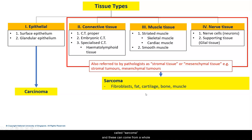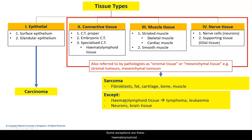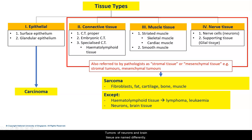Sarcomas can come from a whole range of cell types, for example fibroblasts seen in connective tissue proper, fat, cartilage, and bone, which are part of specialised connective tissue, and also muscle. This is not an exhaustive list. Some exceptions exist: hematolymphoid malignant tumours are known as lymphoma or leukemia, if they are primarily involving the bone marrow. Tumours of neurons and brain tissue are named differently.